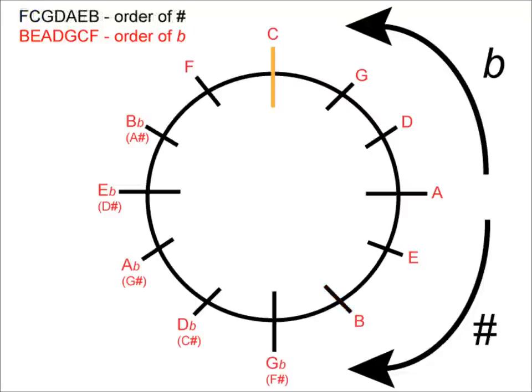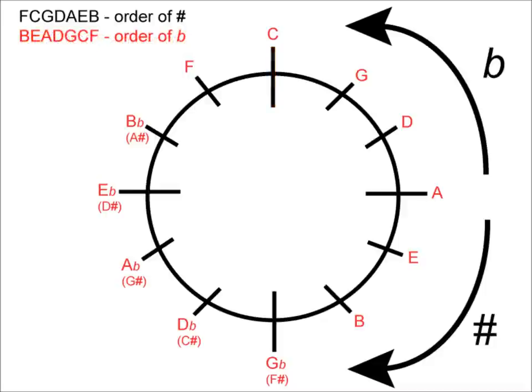The same system works for the order of flats. C minor has three flats in its key signature. The first three letters of our order of flats are B, E, and A. Therefore, in C minor, there are three flats in the key signature and they are B flat, E flat, and A flat. You can use the order of flats to help you with all the other minor keys as well.